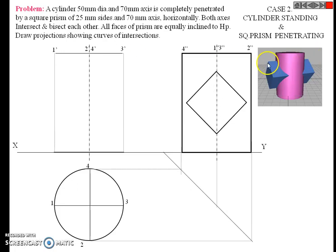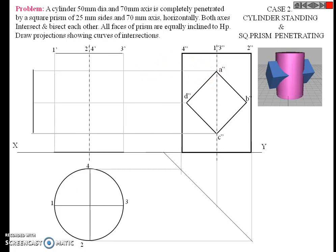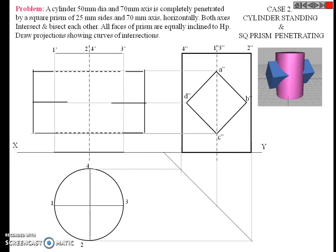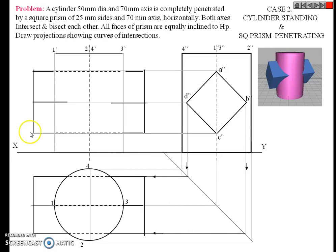Draw the side view of the second solid and give numbering: a, b, c, d double dash. Then take the projection of the side view for the front view and for the top view, and draw this top view.